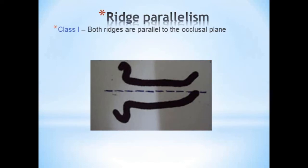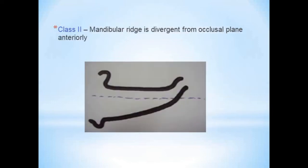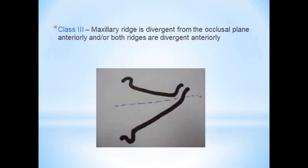Next is ridge parallelism — the relative parallelism between the planes of the ridges. Class 1 is where both ridges are parallel to the occlusal plane, making teeth setting easy. In Class 2, the mandibular ridge is divergent from the occlusal plane anteriorly; when teeth are lost, the residual ridge starts to diverge, and non-parallel ridges cause movement of the denture bases during occlusion due to unfavorable force direction. Class 3 is where the maxillary ridge, or both ridges, are divergent from the occlusal plane anteriorly.